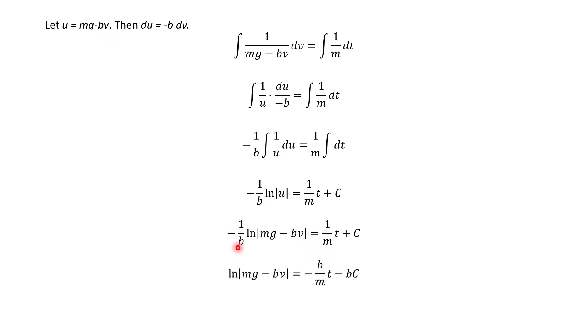And then let's go ahead and just move this negative b from this denominator, so multiply both sides of this equation by negative b. And that's why we end up with negative b over m times t, and then negative bc.